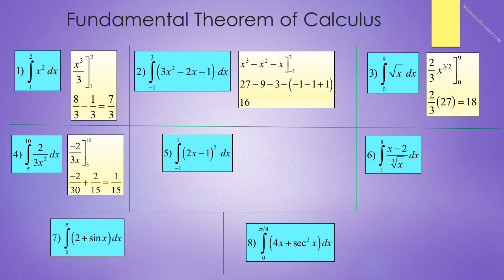Number 4 reads the integral from 5 to 10 of 2 over 3x squared. We can write that expression as 2 thirds x to the negative 2, and when we integrate we get negative 2 over 3x evaluated from 5 to 10. So that gives negative 2 over 30 plus 2 over 15. Final answer is 1 over 15.